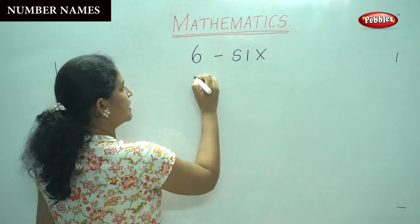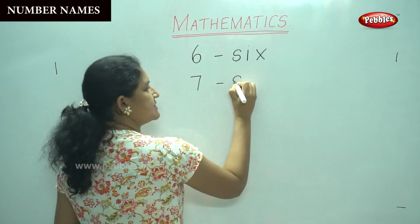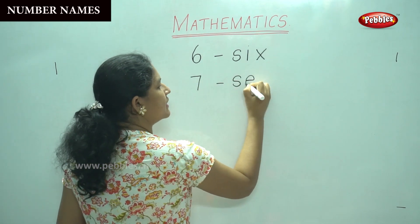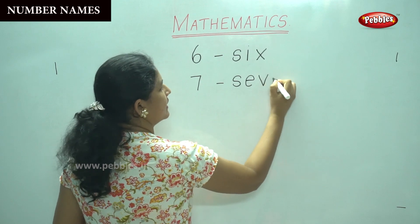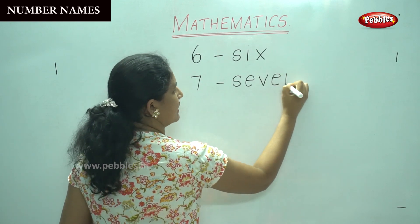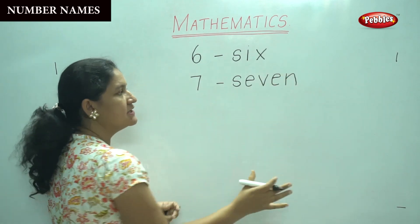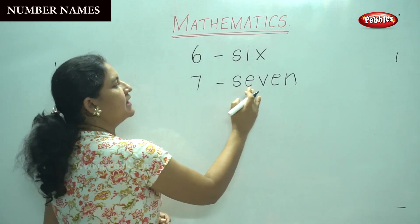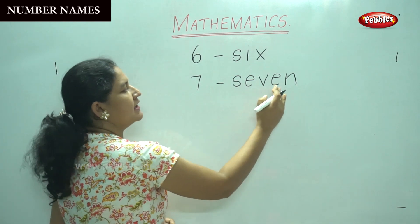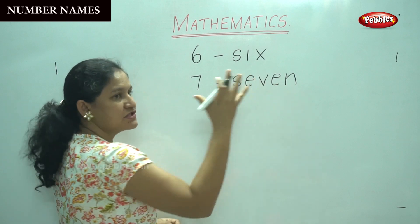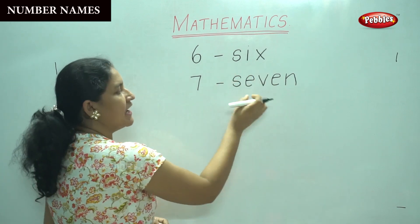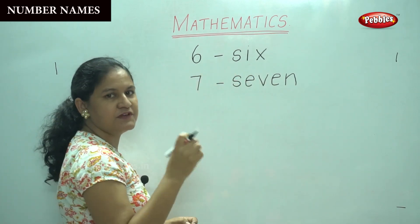The next number, number 7: S-E-V-E-N. This is number 7: S-E-V-E-N. You should see that you have two E's in between alphabet V.